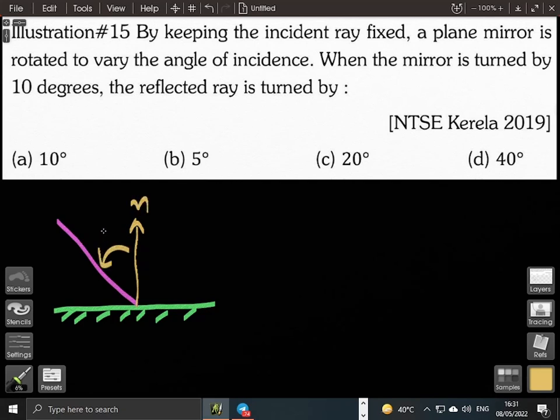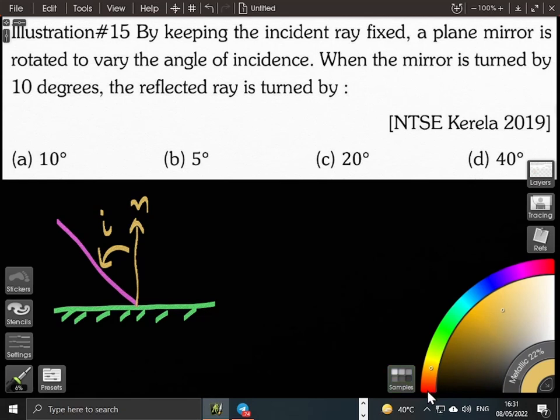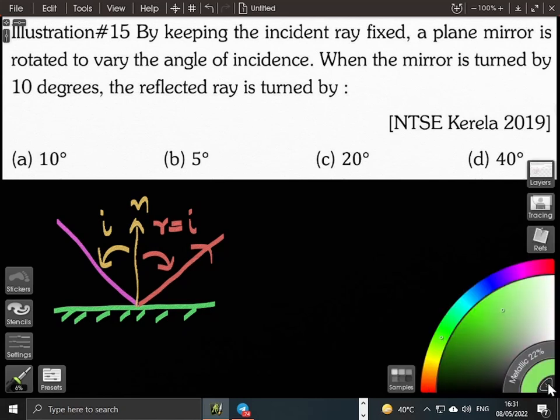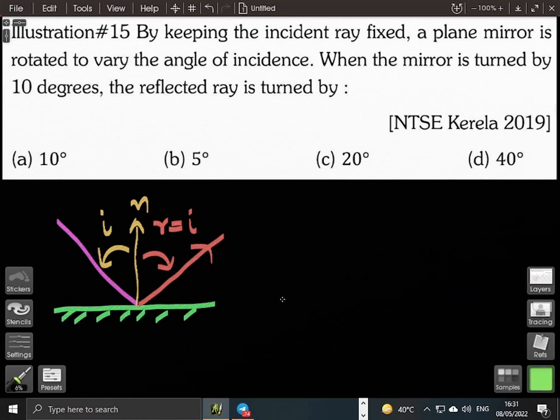And as we know, due to the law of reflection, the ray will be reflected at the same angle, r equal to i. Now suppose what we do is we tilt this mirror by a certain angle.